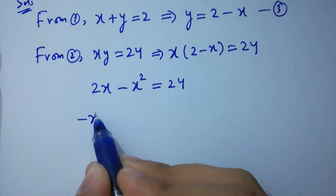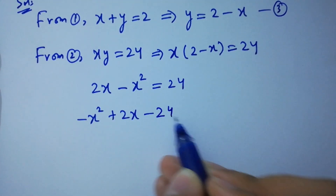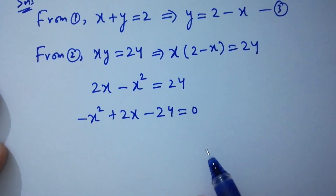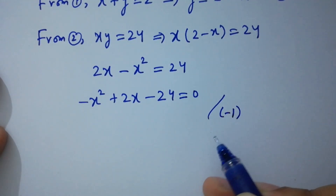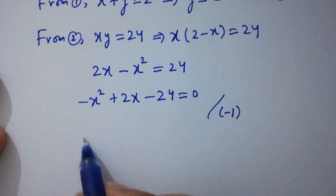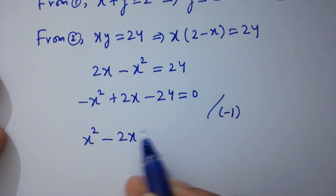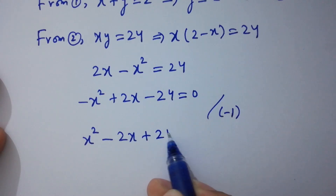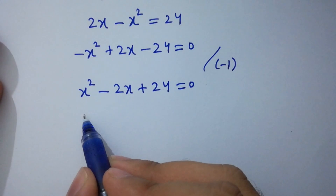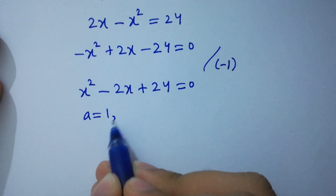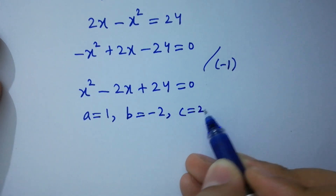Rearranging: negative x squared plus 2x minus 24 equals 0. Dividing both sides by negative 1, we get x squared minus 2x plus 24 equals 0. This is our quadratic equation where a equals 1, b equals negative 2, and c equals 24.